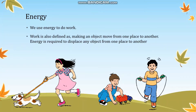In order to do work you need energy. The images you can see are representations of activities that need energy. In the first activity you can see a girl who is playing with her dog — to do this she needs energy because she is running about and doing work. In the next picture a little boy is playing with his toys, and their friend is playing with a skipping rope. All these activities require energy.